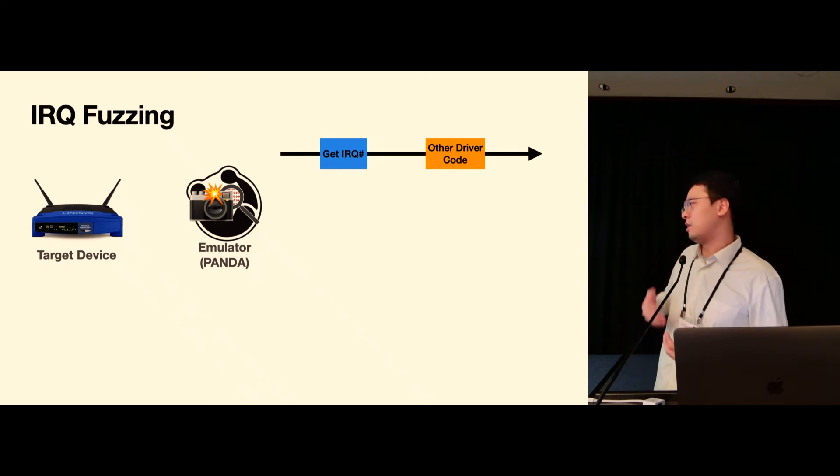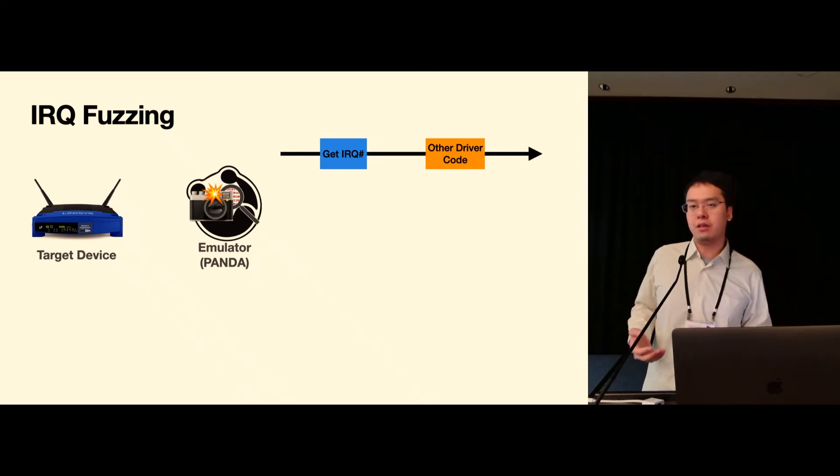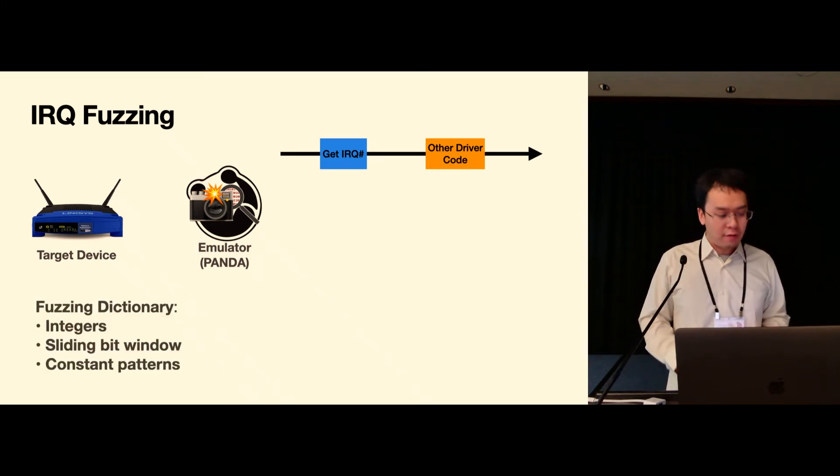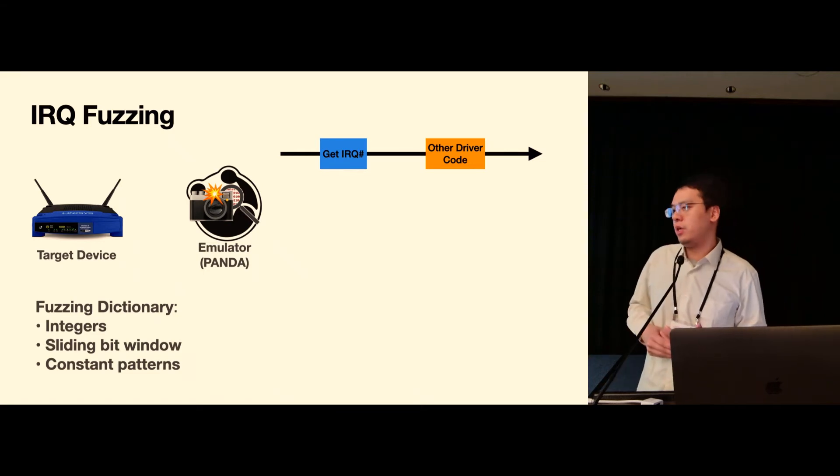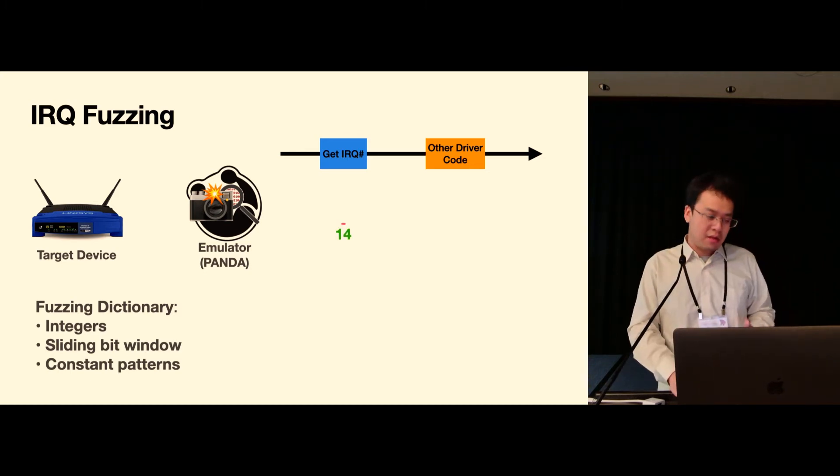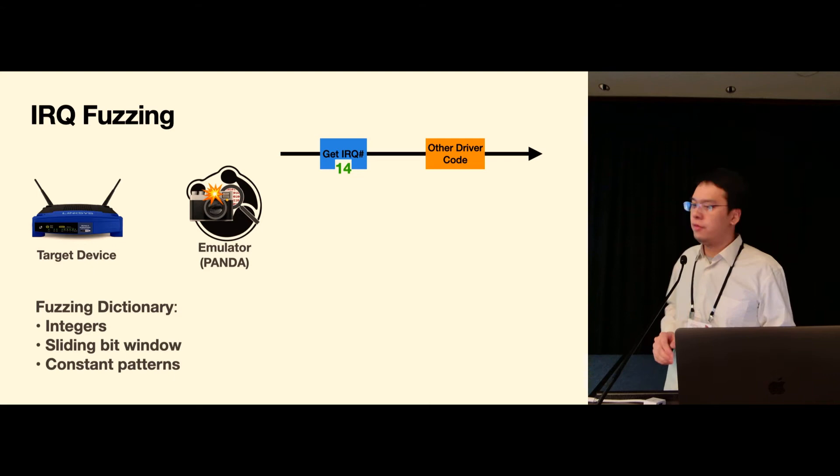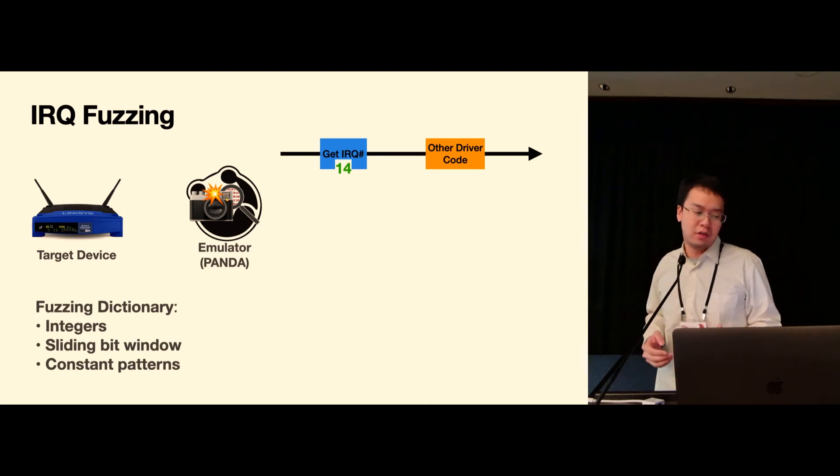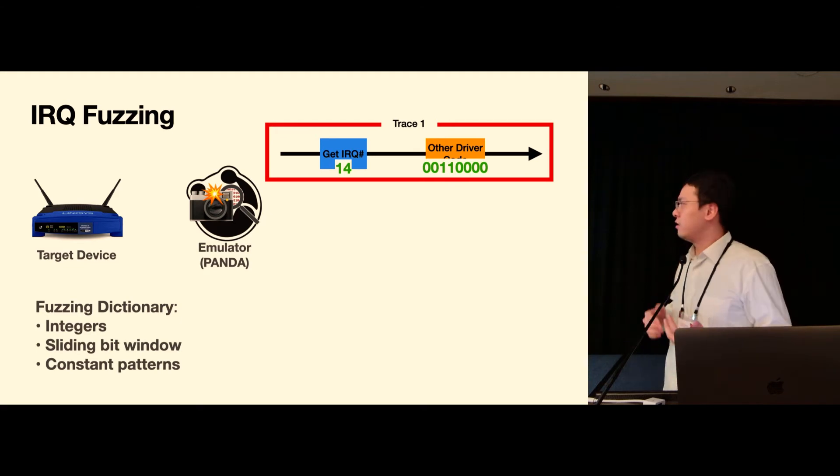So to simulate the hardware input, we use a sequence of dictionary values which contains several patterns such as integers, sliding window, bitmasks, and several constant patterns such as zero or negative one.